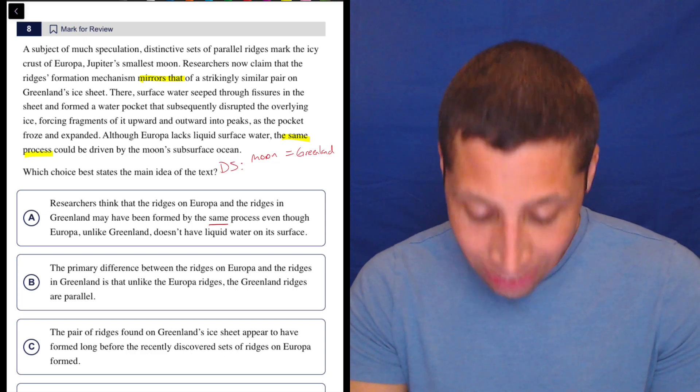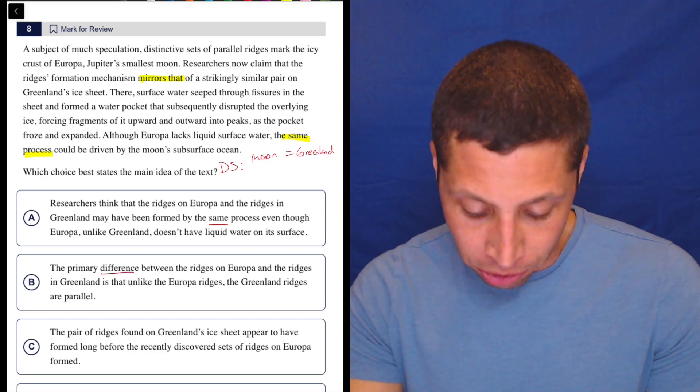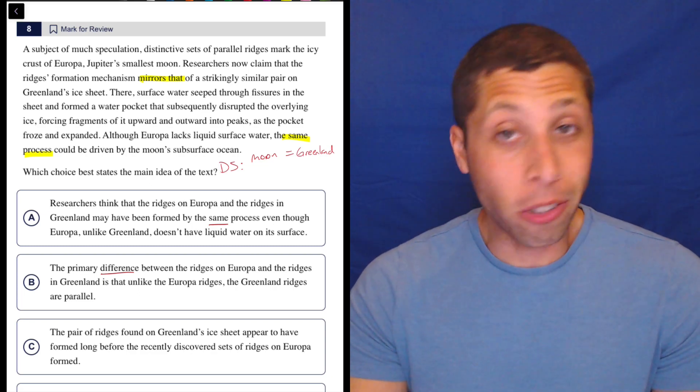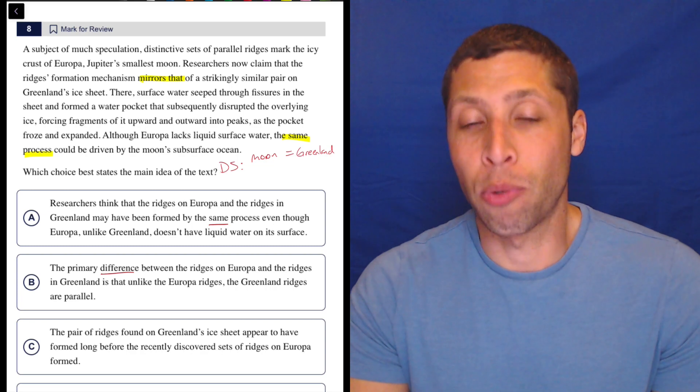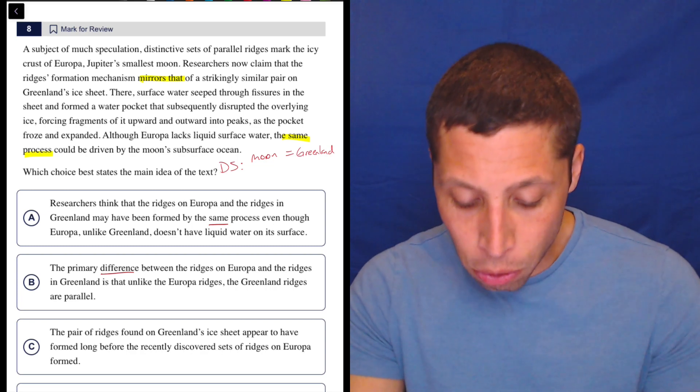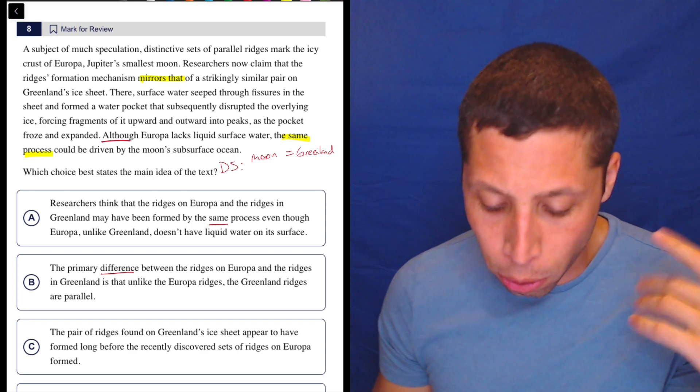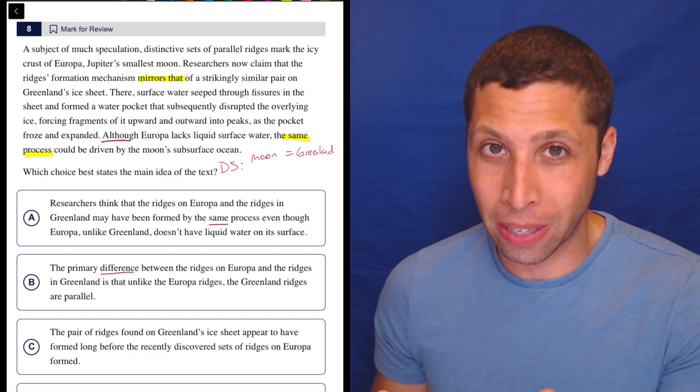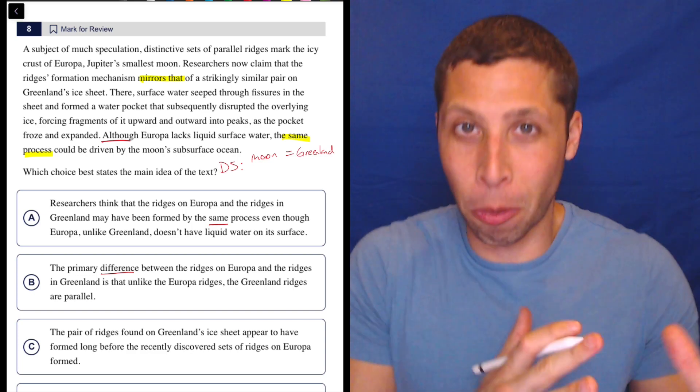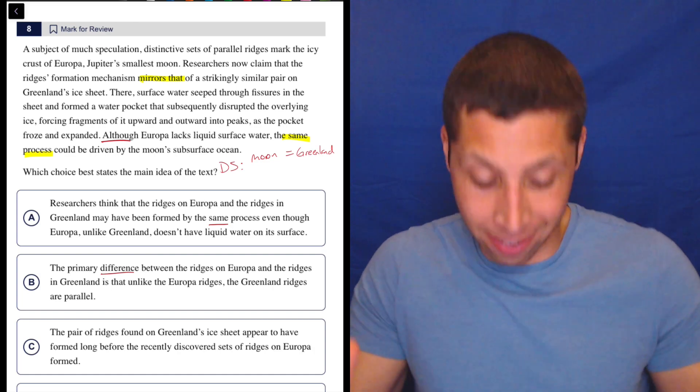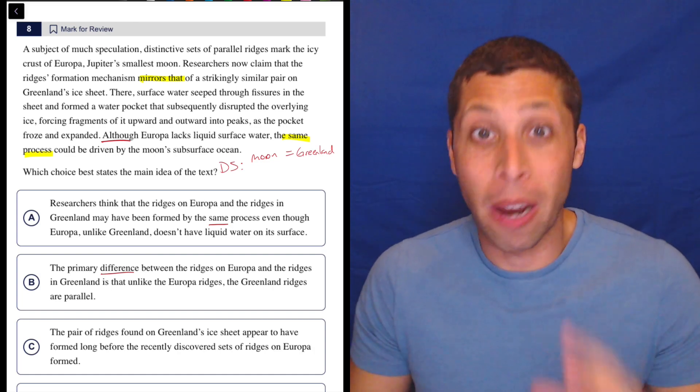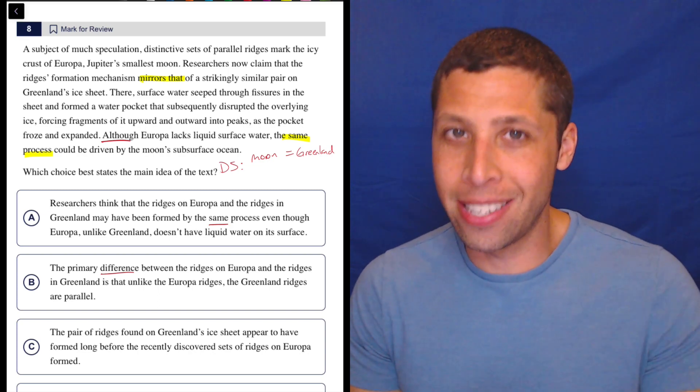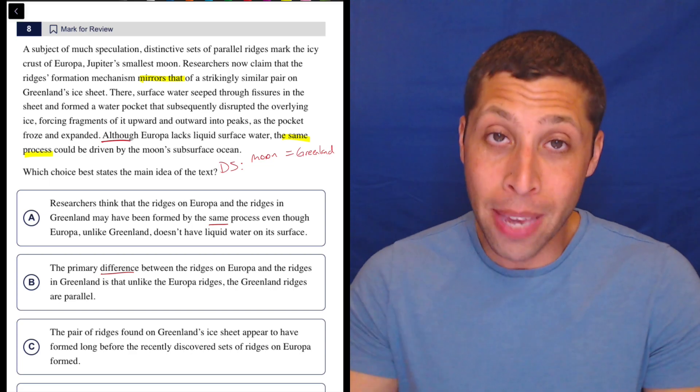The primary difference between the ridges on Europa and the ridges in Greenland is that unlike the Europa ridges, the Greenland ridges are parallel. So just from a dumb perspective, that seems wrong. The whole point of the passage is they're the same. They do mention in the passage, like the end here, although Europa lacks liquid surface water, right? They are kind of suggesting there's some difference between these places, but very clearly that's the extra part of that sentence. The main part of that sentence is no, it's the same process. Main ideas are repeated ideas. So there's much more saying that this is similar than there is saying that it's different. So it would be weird to choose a choice like B that says they're different.